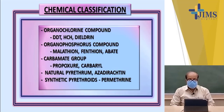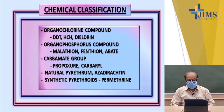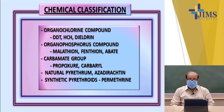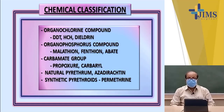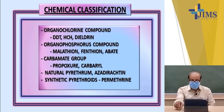In the chemical classification, the organochlorine group includes DDT, HCH, and dieldrin — all very commonly used insecticides. Then there are organophosphorus compounds like malathion, fenitrothion, and abate. In the carbamate group, there is propoxur and carbaryl. In the natural group, there is pyrethrum and azadirachtin, and in the synthetic pyrethroids, there is permethrin and deltamethrin.